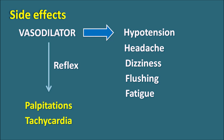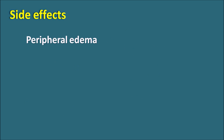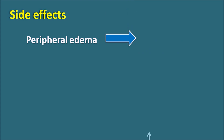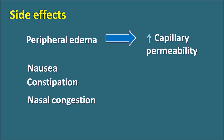The baroreceptor reflex can also activate the renin-angiotensin system, which further increases the rate of cardiac contraction. In this way, nifedipine can produce reflex tachycardia due to vasodilatation. Another important side effect is peripheral edema — since nifedipine acts as a vasodilator, it can increase capillary permeability, resulting in accumulation of body fluids and peripheral edema. Ankle swelling can also be observed. Other side effects include nausea, constipation, and nasal congestion.